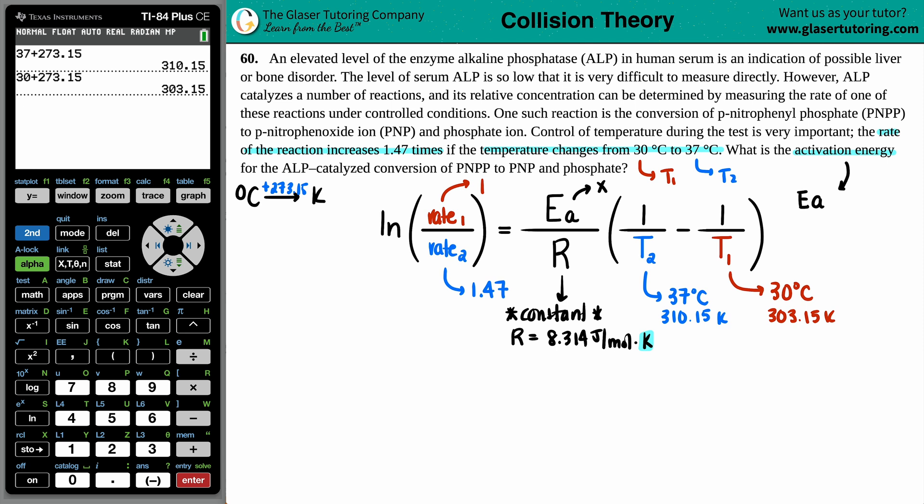So I guess we'll start on this side. Ln of the 1 divided by 1.47 equals, we have a fraction here, x over 8.314, okay, times by the 1 over that one temperature minus 1 over the other temperature. I might need a little bit more room here.